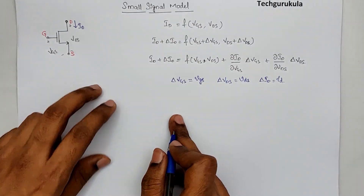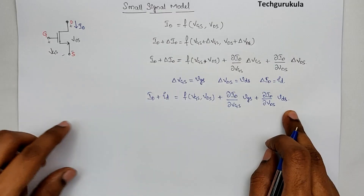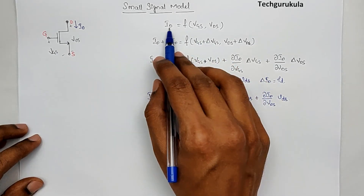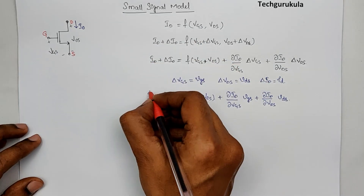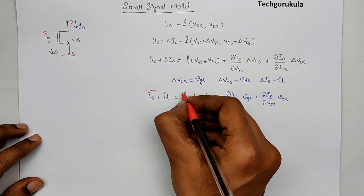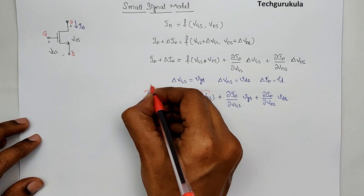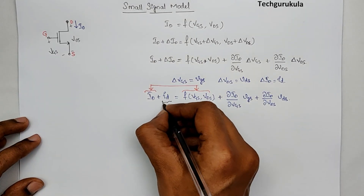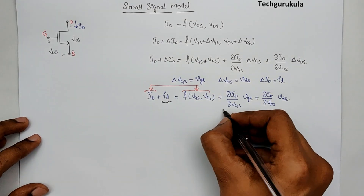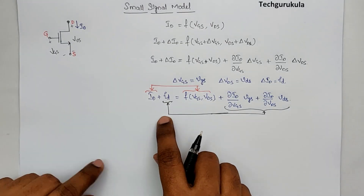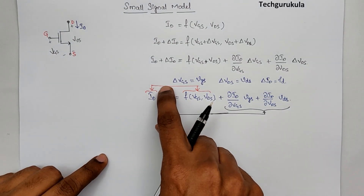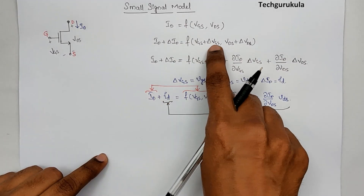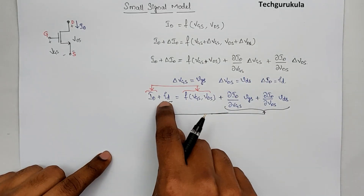Now if we rewrite this expression, we can say that f(VGS, VDS) is nothing but the capital ID. Hence, those two values are in fact equal and cancel. In that case, we can say small id equals the remaining terms. So our interest is only in the small id value, which results from small changes in VGS and VDS.